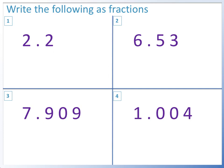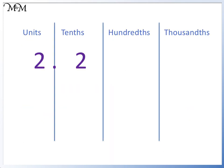Here are some questions for you to try. Please pause the video and have a go. Question 1: 2.2. The whole number is 2, so we can write that down. The decimal number finishes in the tenths column, so we will have a fraction out of 10. Reading across from the decimal point, we have 2, so 2 tenths.